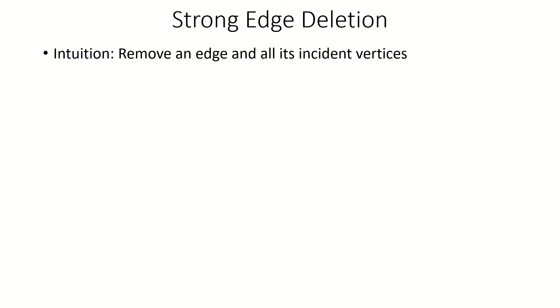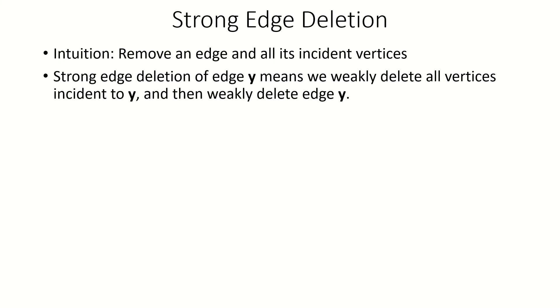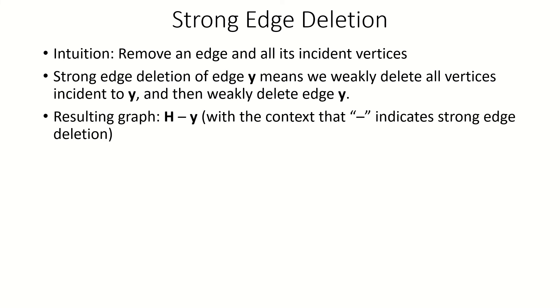Now let's move on to strong edge deletion. Strong edge deletion is when we remove an edge and all vertices incident to it. In other words, strong deleting an edge y means we weakly delete all vertices incident to y, and then we weakly delete edge y.